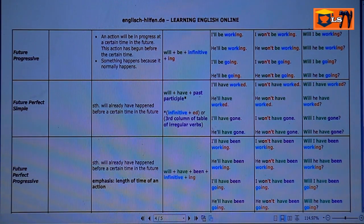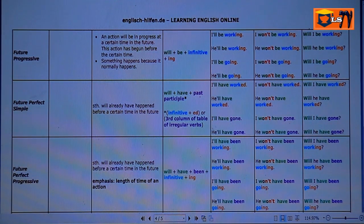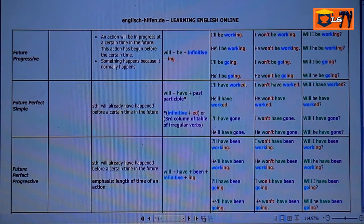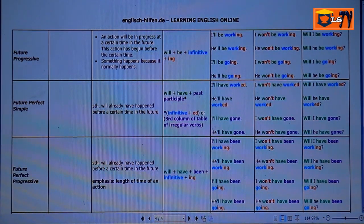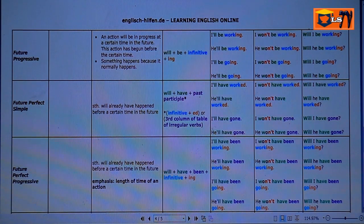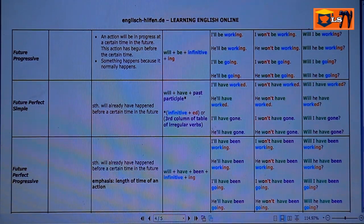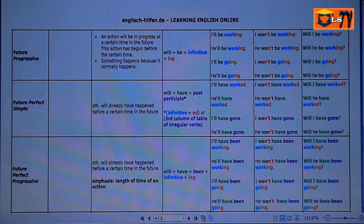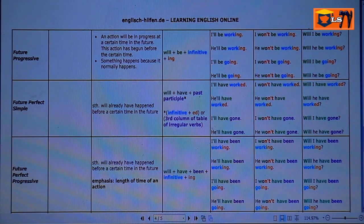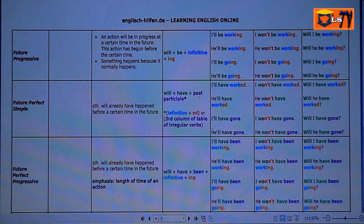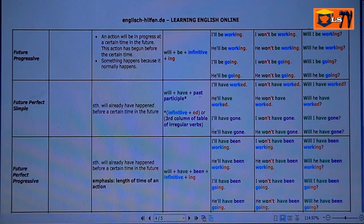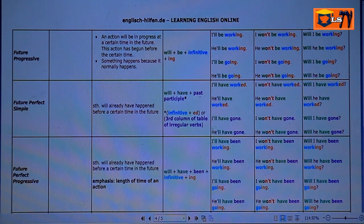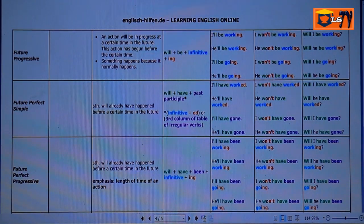Example. I'll have been working, he'll have been working, I'll have been going, he'll have been going. Negative: I won't have been working, he won't have been working, I won't have been going, he won't have been going. Interrogative: Will I have been working? Will he have been working? Will I have been going? Will he have been going?